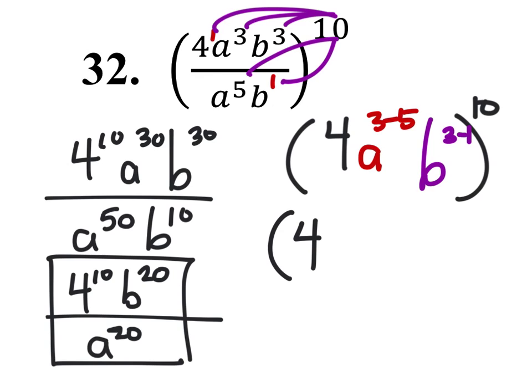So this would be 4, a to the power of negative 2, b to the power of 2, and all of this to the power of 10.